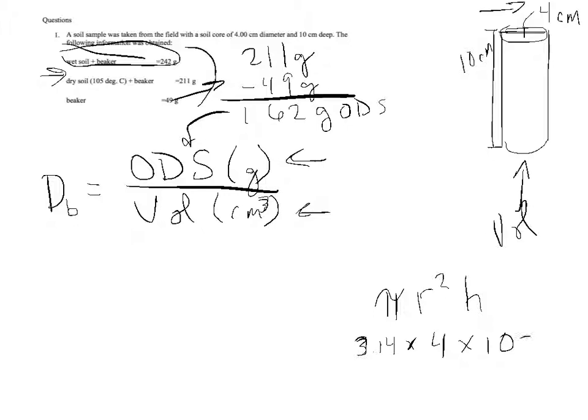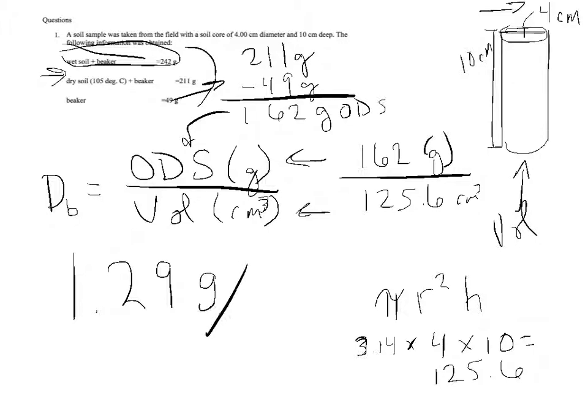So 3.14 times 4 times 10 is 125.6 cubic centimeters. We've got 162 grams of oven dry soil divided by 125.6 cubic centimeters. That gives us 1.29 grams per cubic centimeter.